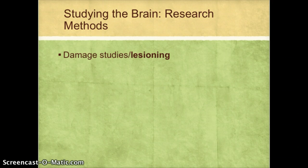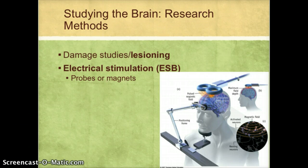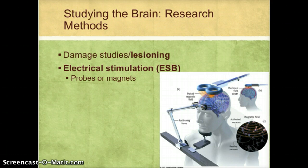Then we were finally able to develop technologies that allowed us to study the brain in very different ways. One way is electrical stimulation. Neurons communicate using electricity within the neuron, and if you apply a mild electrical current — not enough to kill the neuron, just enough to activate it — you can externally apply an electrical impulse to a set of cells and cause those cells to activate, fire, and release their neurotransmitters.